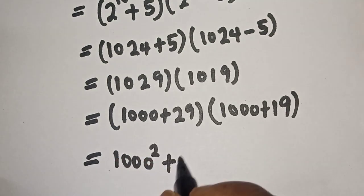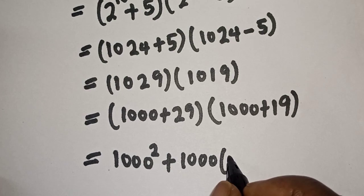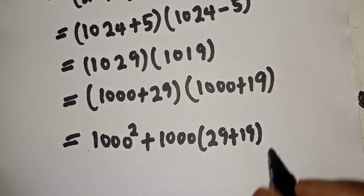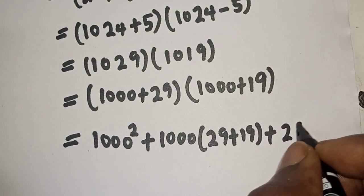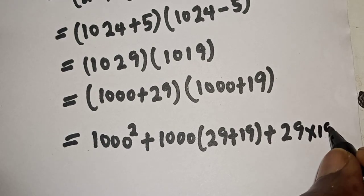1000 square plus 1000 bracket 29 plus 19, then this is 1000 square plus 1000 times the sum, then 29 times 19.